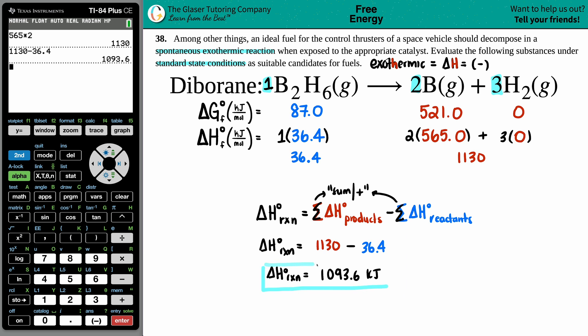This is a positive delta H value. Remember we wanted it to be exothermic, negative. Positive values means that you're endothermic, so you're absorbing heat. Since this is endothermic and not exothermic, you don't even have to worry about the other part because it's not suitable. It's not suitable for fuel, so that's why they don't use diborane for fuels.